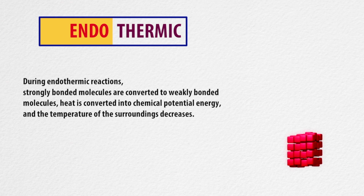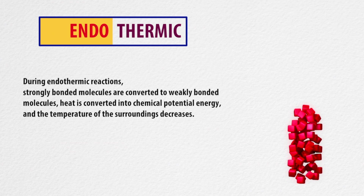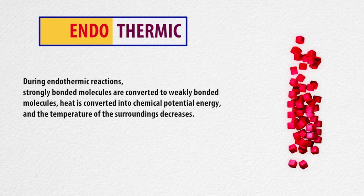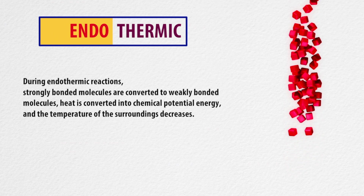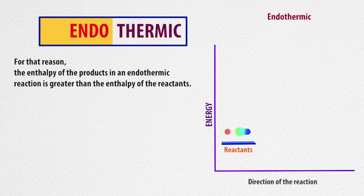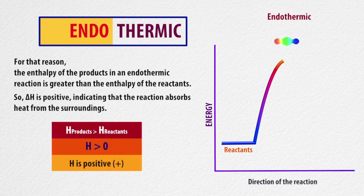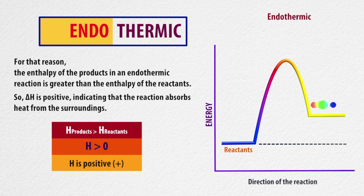During endothermic reactions, strongly bonded molecules are converted to weakly bonded molecules. Heat is converted into chemical potential energy and the temperature of the surroundings decreases. This is why the enthalpy of the products in an endothermic reaction is greater than the enthalpy of the reactants. So delta H is positive, indicating that the reaction absorbs heat from the surroundings, meaning enthalpy of products is greater than enthalpy of reactants.